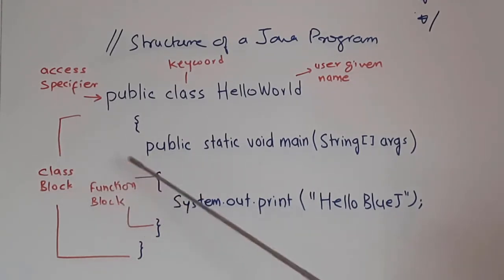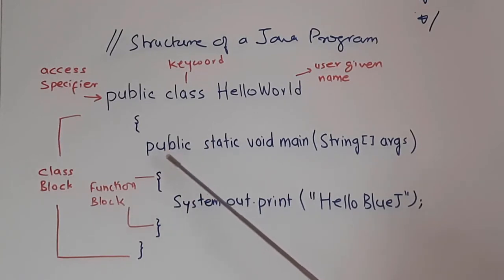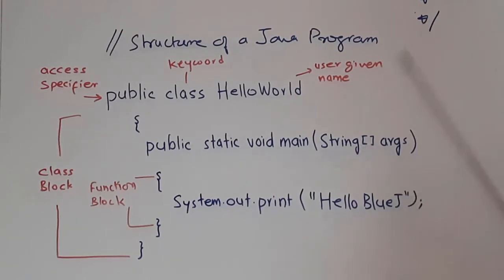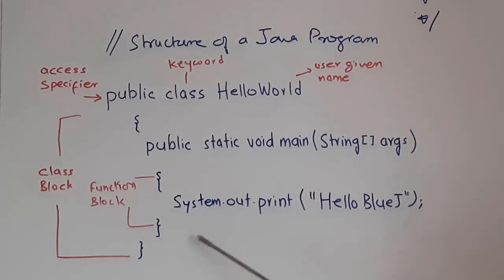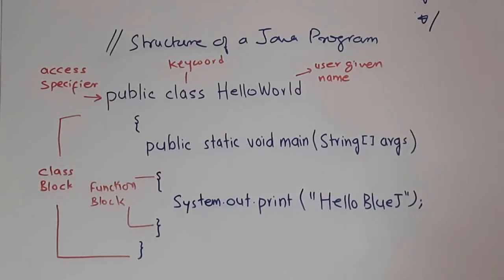Inside a class block, there is a function block. Every Java program should have one main function. We declare the function as: public static void main(String[] args). There will be an opening curly brace and a closing curly brace. We will write only one executable statement in this function block: System.out.print("Hello BlueJ") followed by a semicolon.